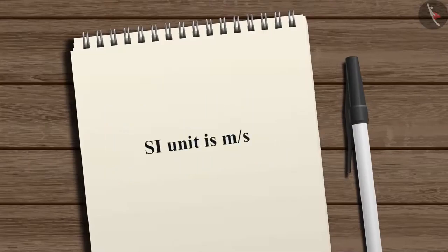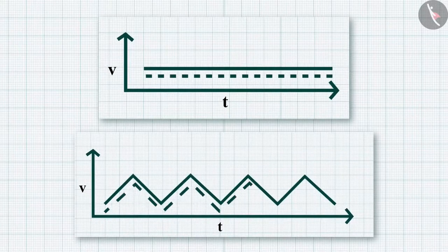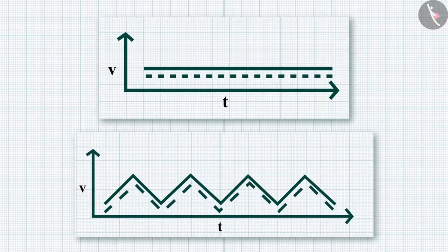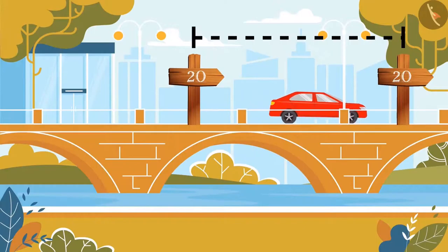The speed of an object can remain constant or it can vary with time. Suppose an object, let's say a red car, covers 20 meters in the first second. In the next second, it again covers 20 meters, and so on. In these short intervals of time, the car covers equal distances.